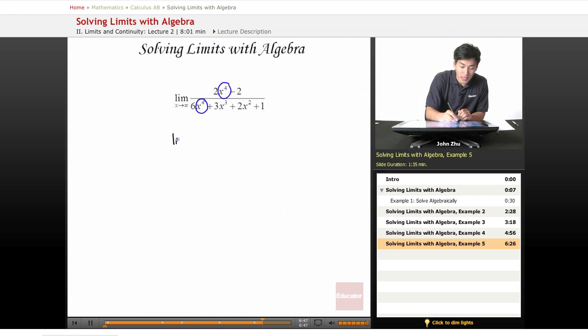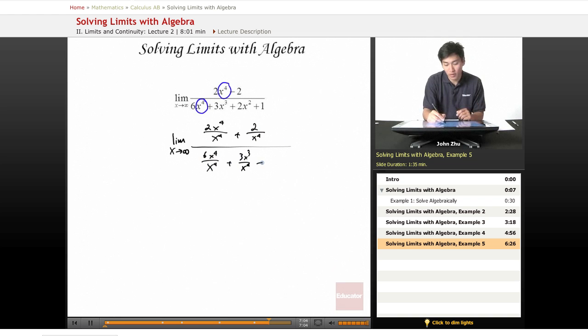So we'll just go ahead and divide by x to the fourth again. And rewriting this, we get limit as x approaches infinity: 2x to the fourth over x to the fourth plus 2 over x to the fourth, all over 6x to the fourth over x to the fourth plus 3x cubed over x to the fourth plus 2x squared over x to the fourth plus 1 over x to the fourth.